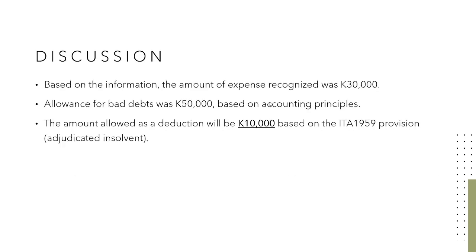In our sample problem, based on the information, the amount of expense recognized is 30,000 Kina and the allowance for bad debts is 50,000 Kina based on accounting principles. But in taxation, we have to use the provision of the legislation. The amount allowed will be 10,000 Kina because Mr. C is considered adjudicated insolvent — not the 30,000 Kina expense, and not the 50,000 Kina allowance for bad debts, because those two are based on accounting principles. Our focus is on the ITA 1959 provision.